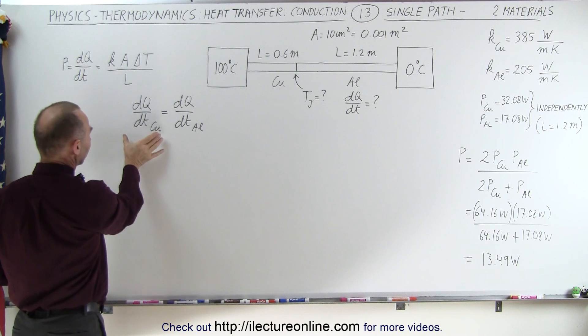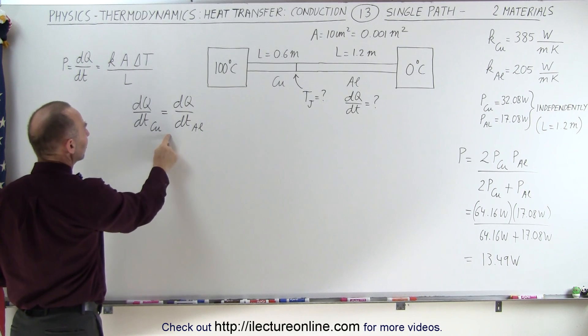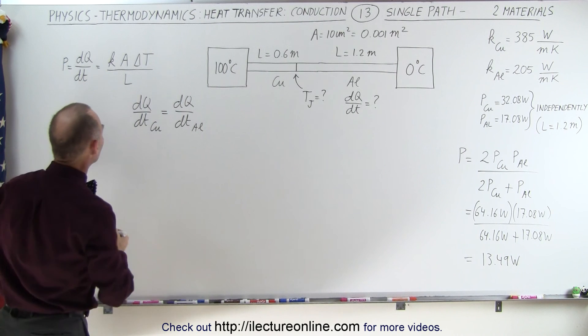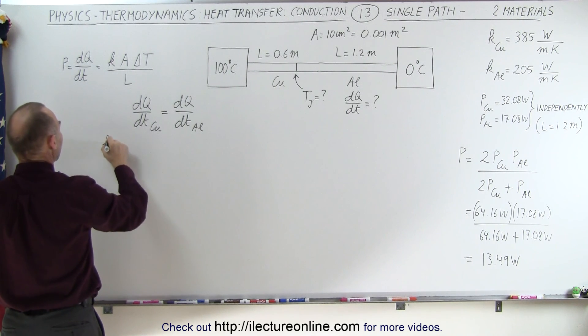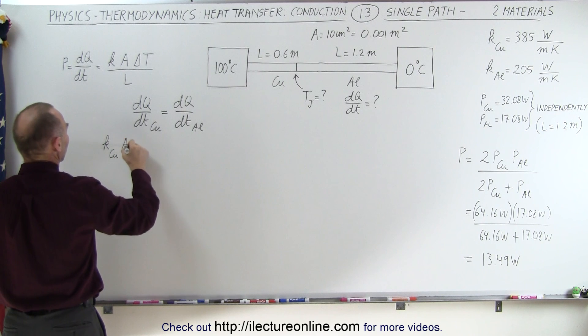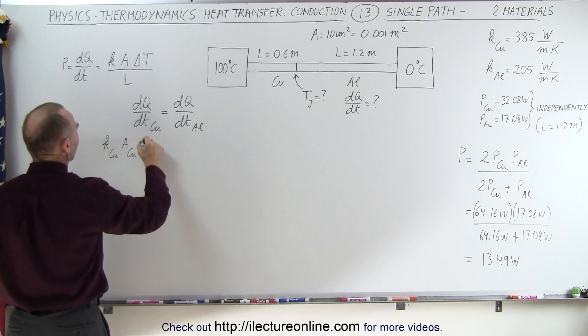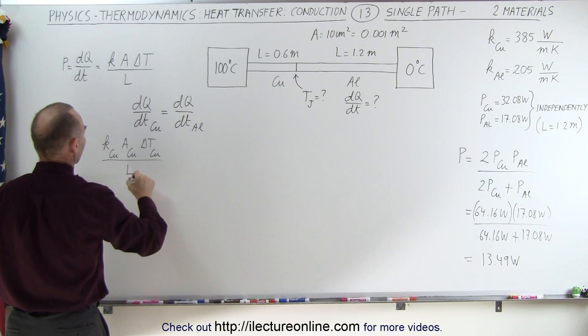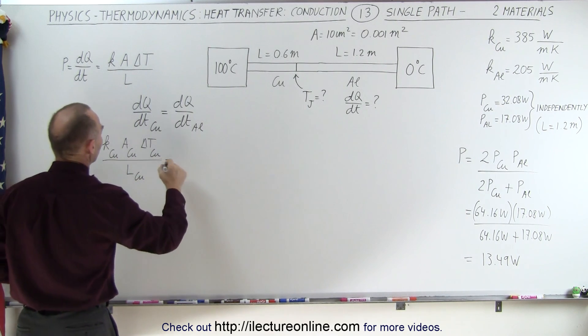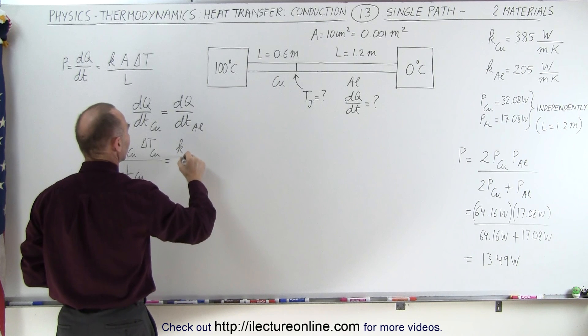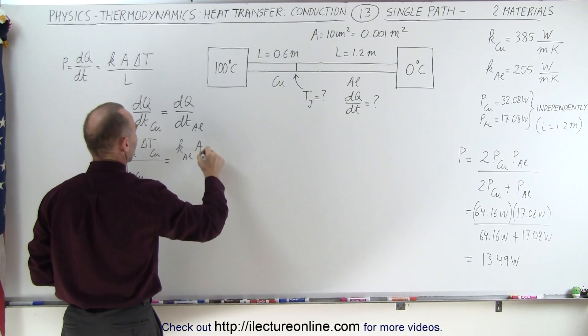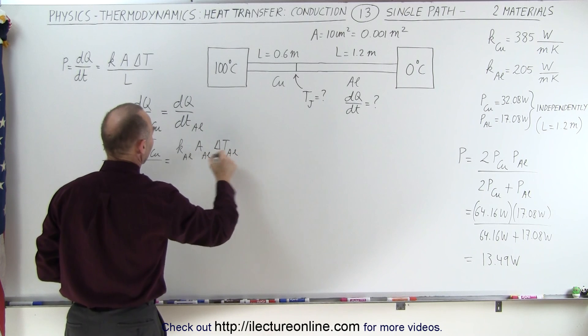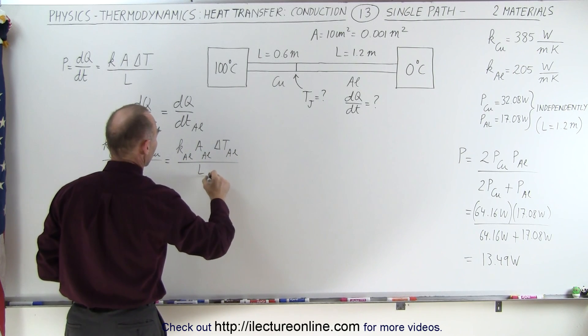And so we have dQ/dt through the copper is the same as the dQ/dt through the aluminum. And the equation is as follows: so we write k of the copper times the cross section area of the copper times the difference in the temperature of the copper divided by the length of the copper equals the heat conductivity of aluminum, cross section area of aluminum, the delta T of the aluminum, and the length of the aluminum.